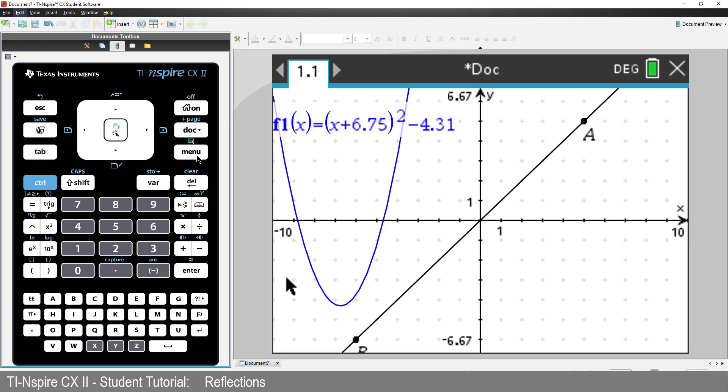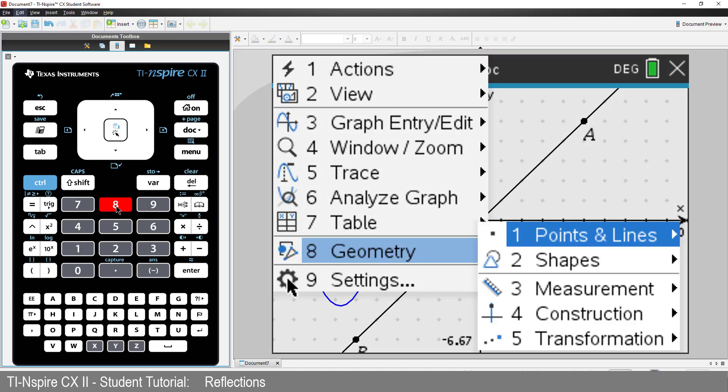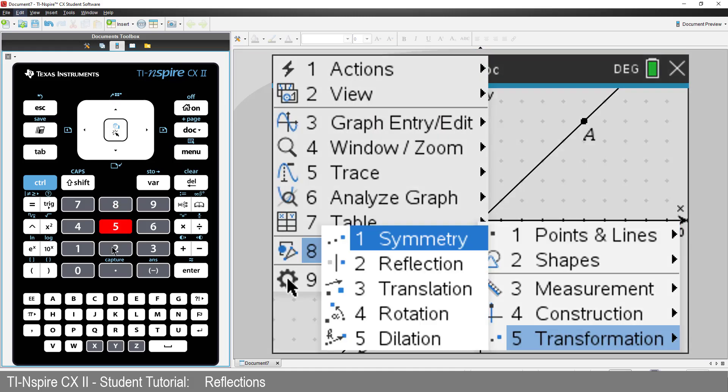Now we can proceed as we did before to create a reflection of a point, and then an equation, in the line y equals x.